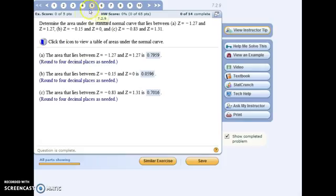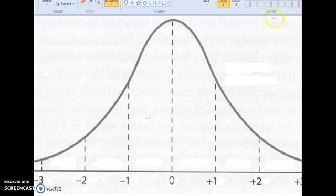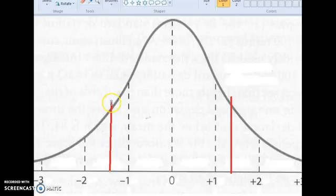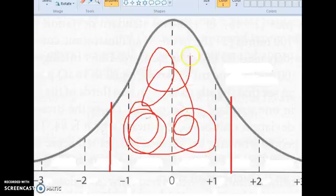Number 5, again, we're using the standard normal curve. But this time we're finding the area between two Z values. For part A, it's Z equals negative 1.27 and positive 1.27. We're going to try to find the area between those values. So if you went to positive 1.27 standard deviations above the mean and then negative 1.27 standard deviations below the mean, for part A, we're trying to find the area in between those data values. So this colored in part here.